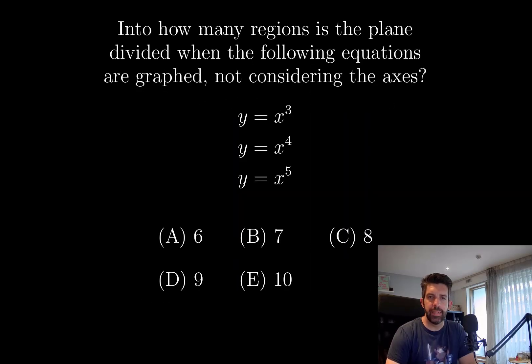Into how many regions is the plane divided when the following equations are graphed, not considering the axes? Y is equal to x cubed, y is equal to x to the 4, and y is equal to x to the 5.